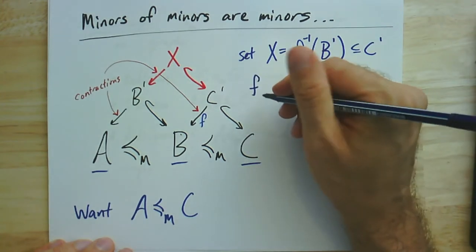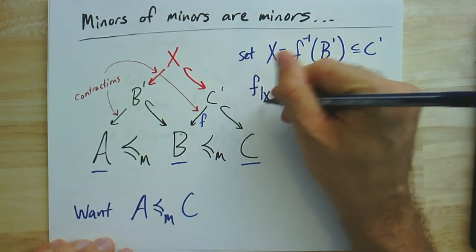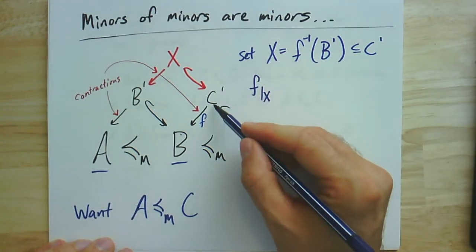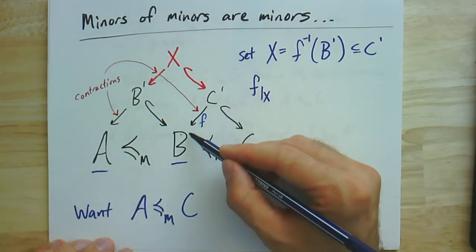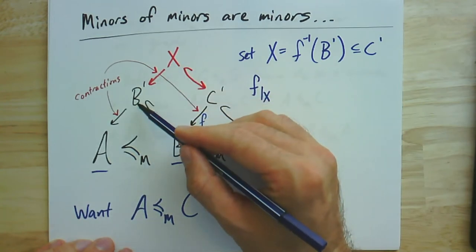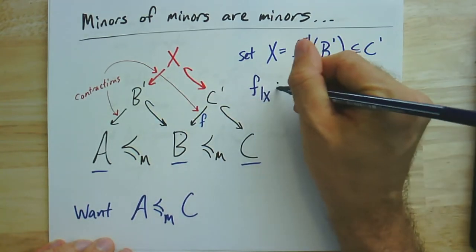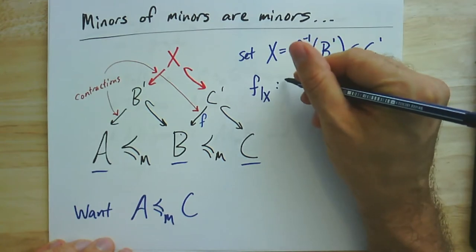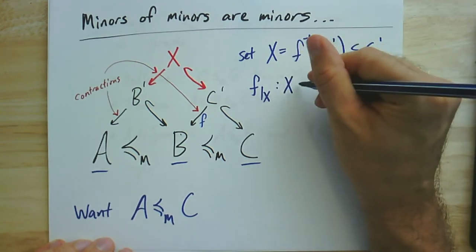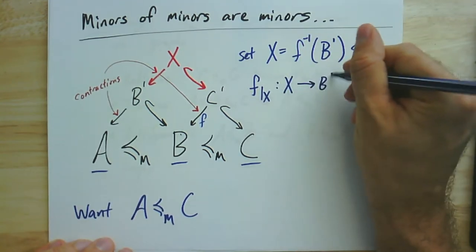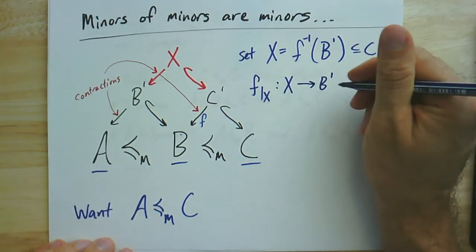Next we look at this contraction F, and we were just restricted to X. So it was supposed to apply to all of C prime. If we take it on just a subset, that's a restriction. And that will map X to B prime. And it is, in fact, a contraction.